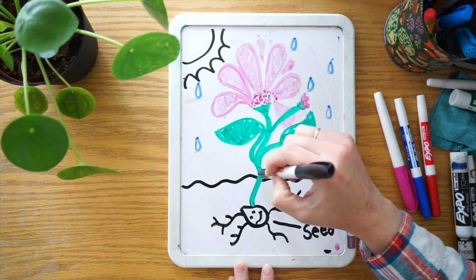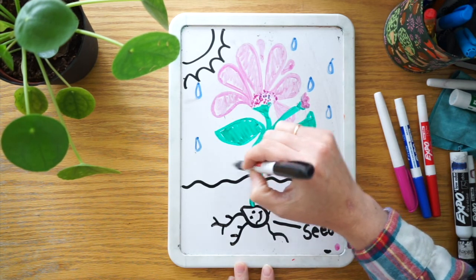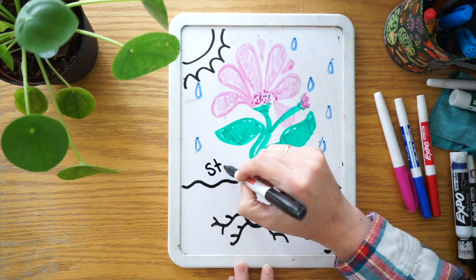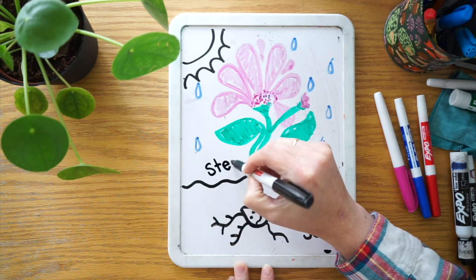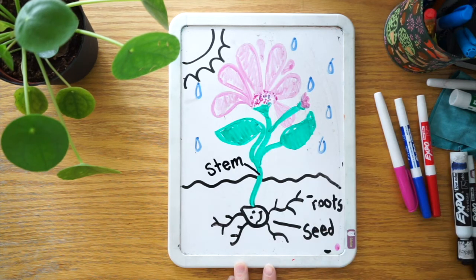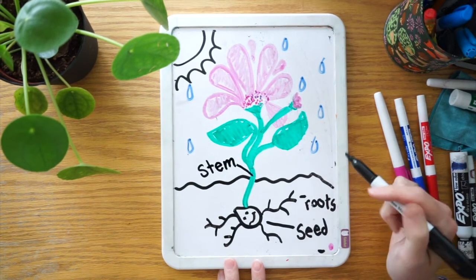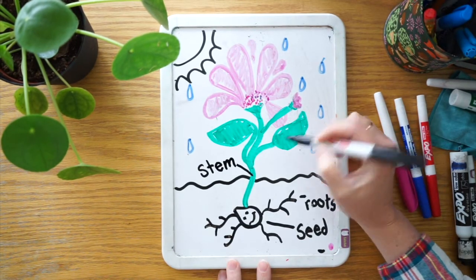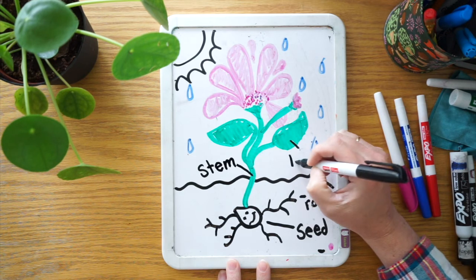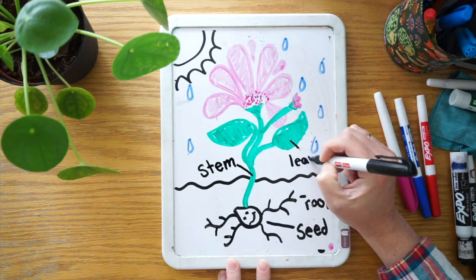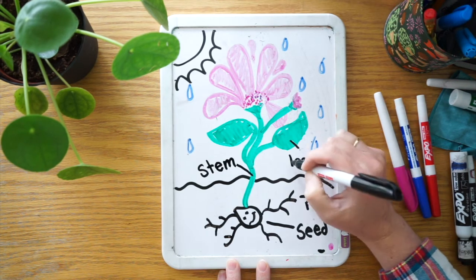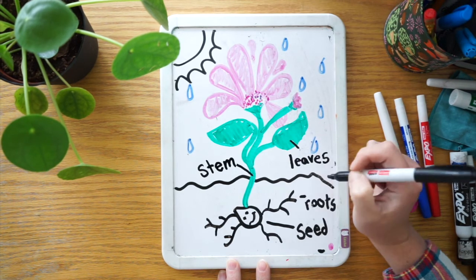And then from the ground, grew the stem. S-T-E-M. Great job! And from the stem, grew leaves. That's one of my daughter's spelling words right now. Leaves.